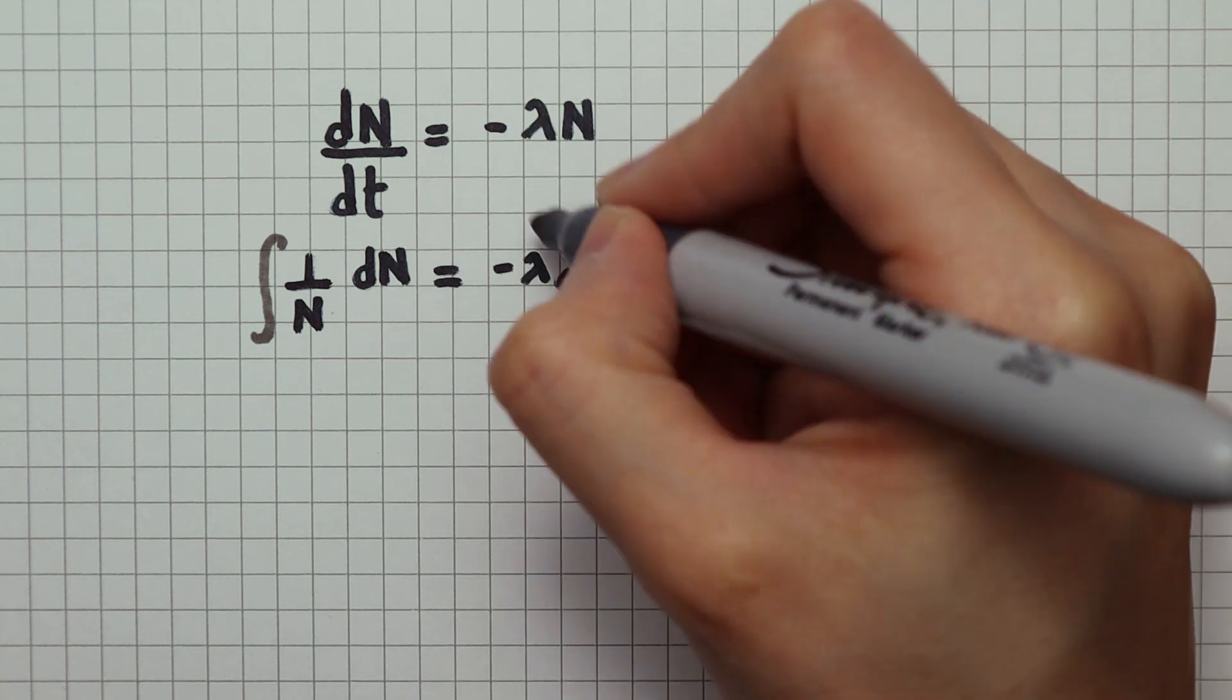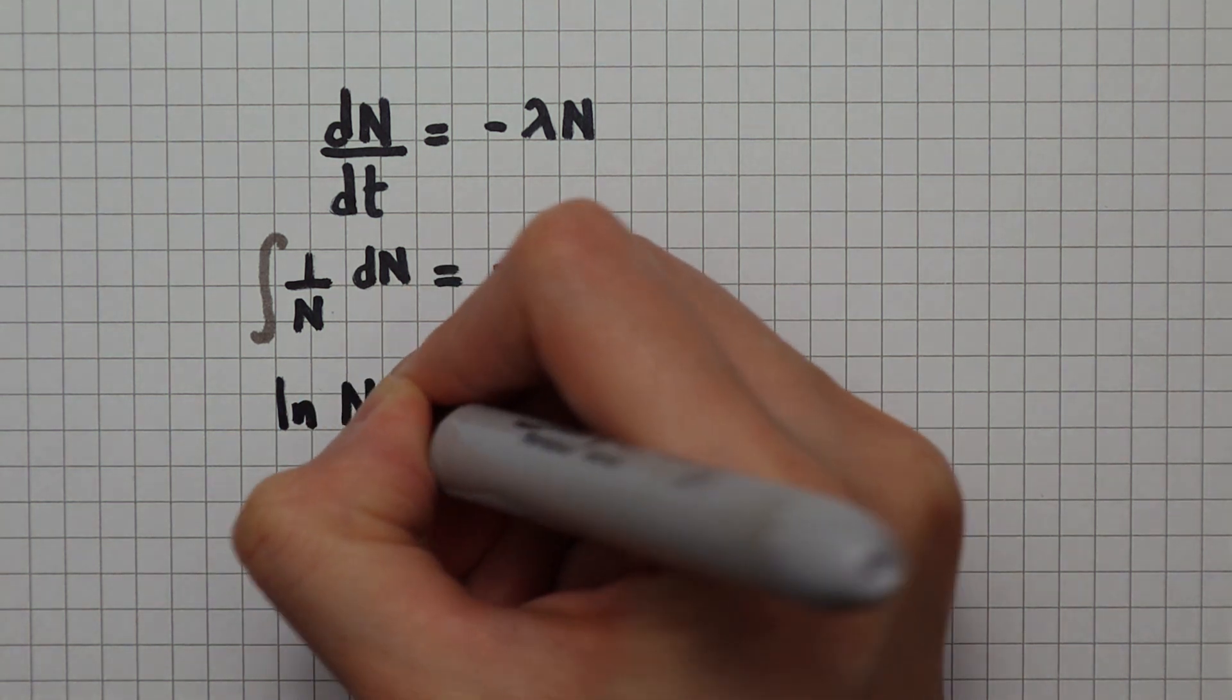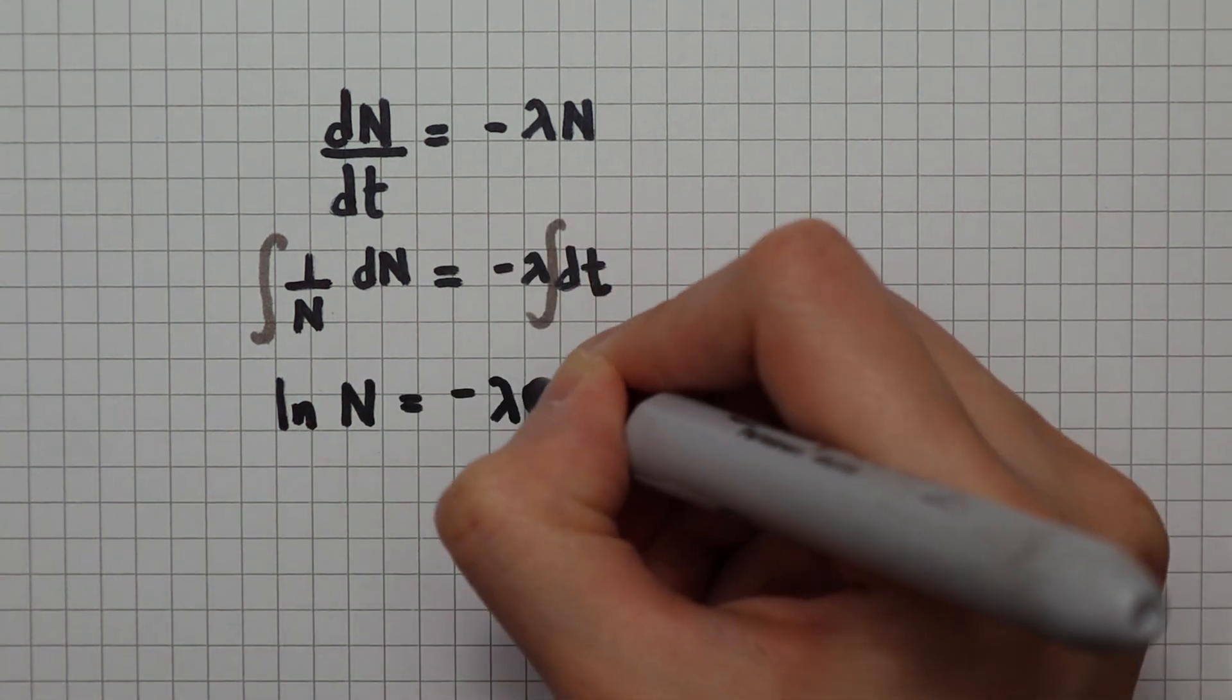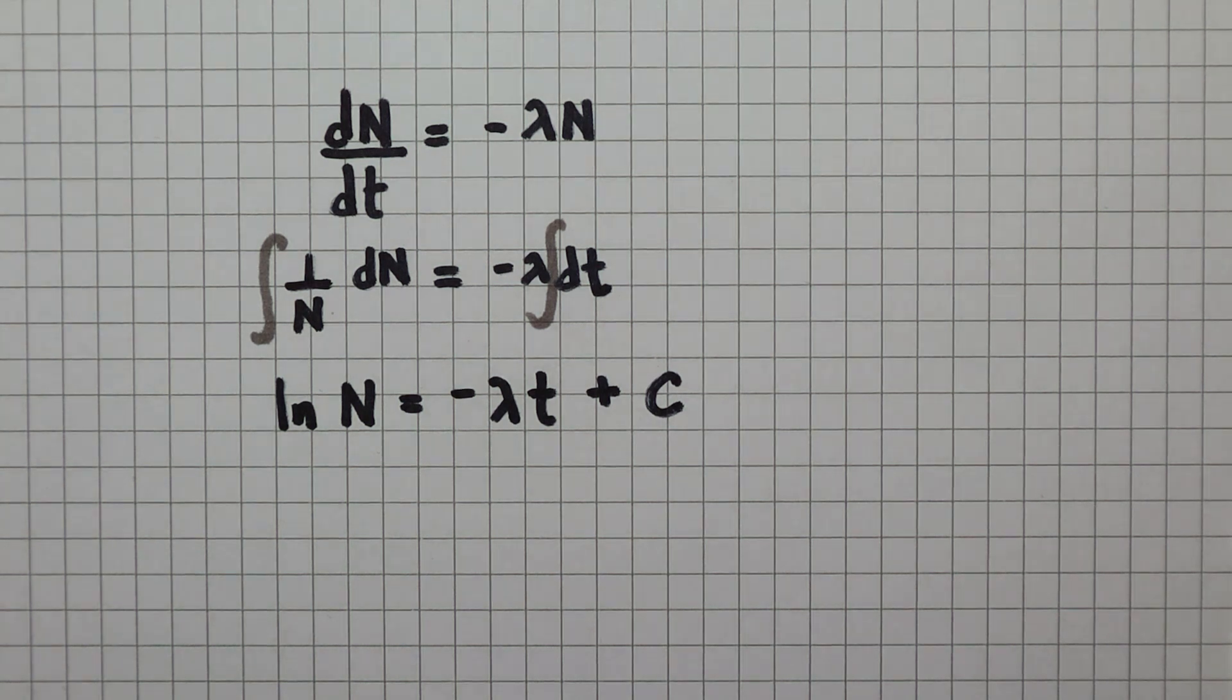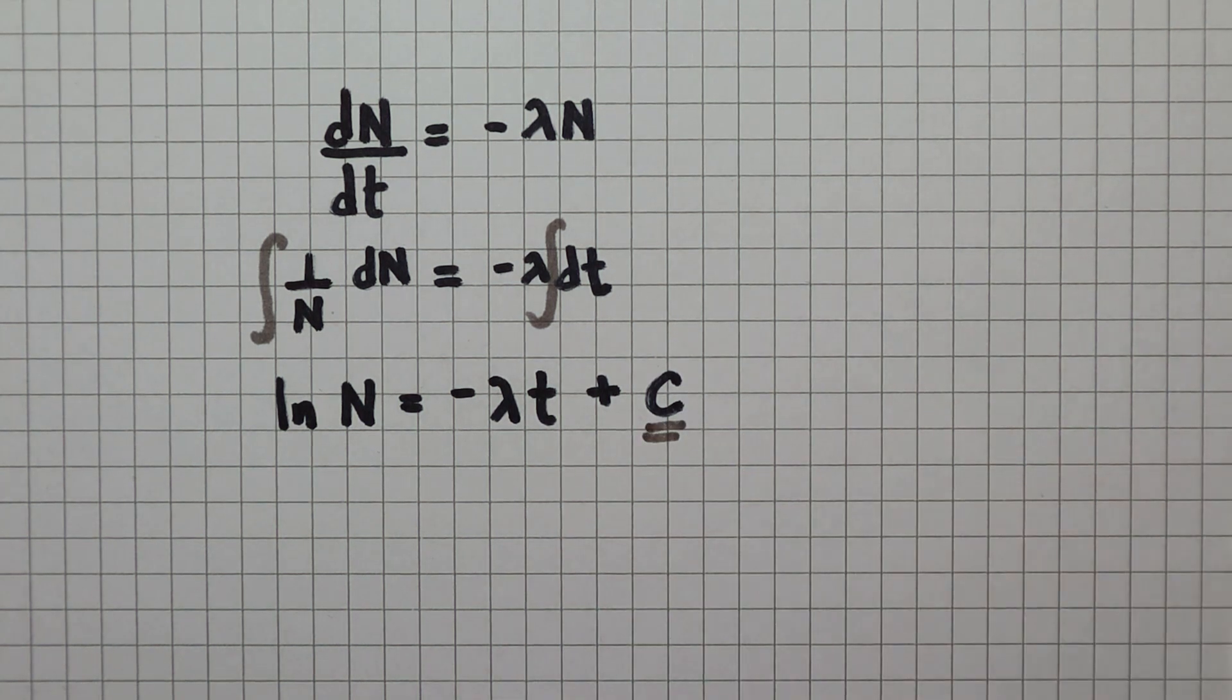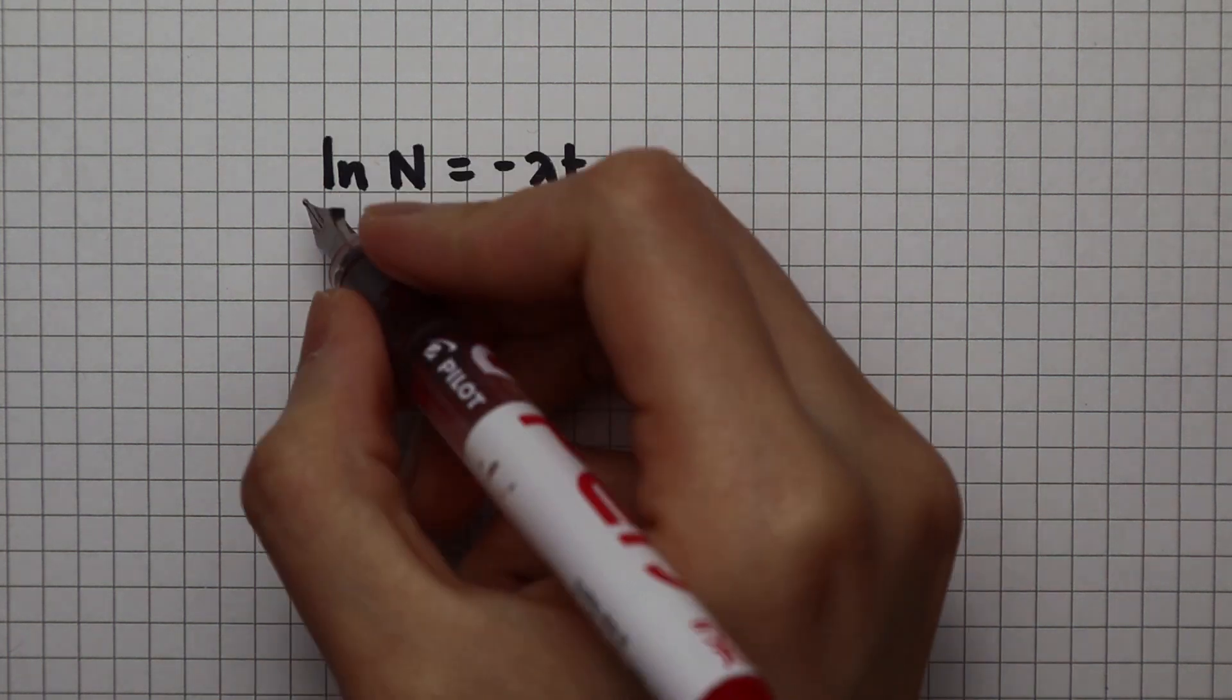I've taken the constant out of the integral as it does not depend on time. Integrating 1 over n gives natural log of n. Integrating with respect to t gives minus lambda times t plus a constant. We have to find out what the constant is by thinking about the initial condition when time is zero.